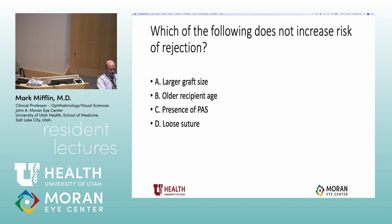Which of the following does not increase the risk of rejection? Larger graft size, older recipient age, presence of peripheral anterior synechiae, or a loose suture?